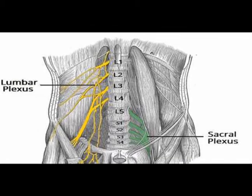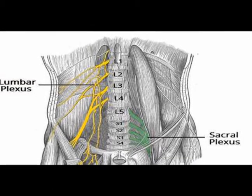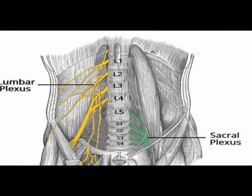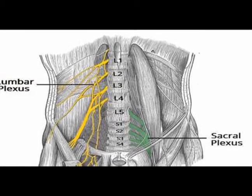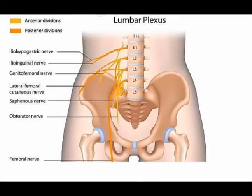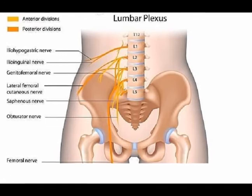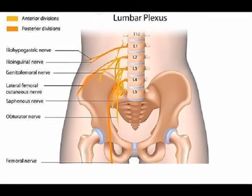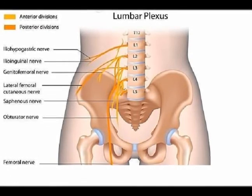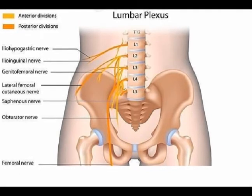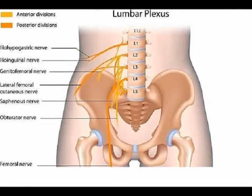These structures are significant for the formation of larger and longer nerves, which supply motor and sensory innervation to the pelvis and the lower extremities. The nerves arising from the lumbar plexus, from superior to inferior, are the iliohypogastric nerve, the ilioinguinal nerve, the genitofemoral nerve, the lateral femoral cutaneous nerve, the femoral nerve, and the obturator nerve.